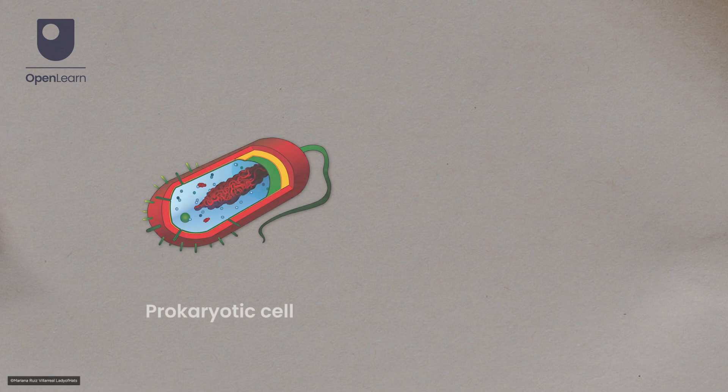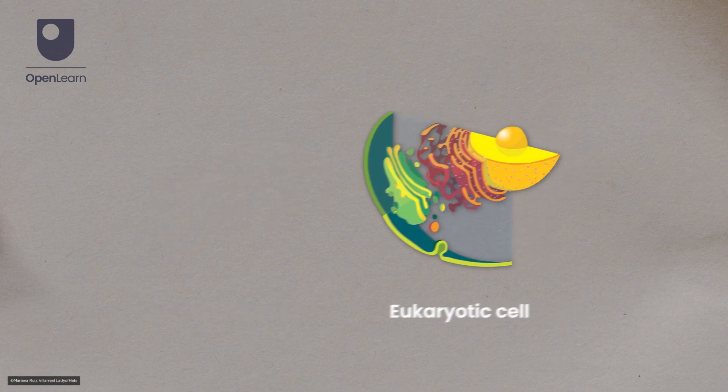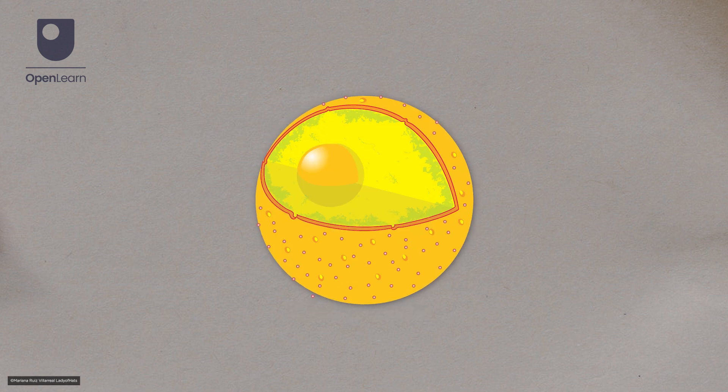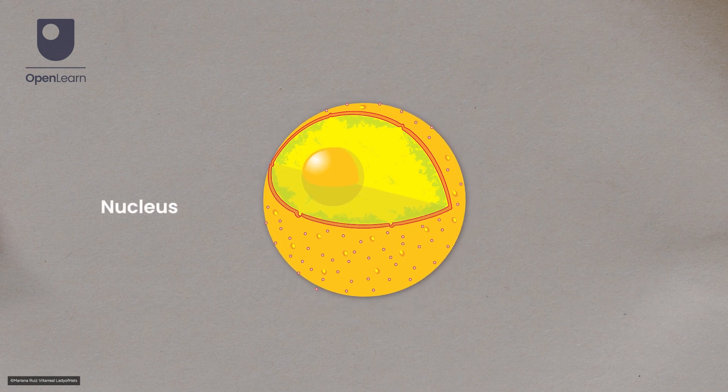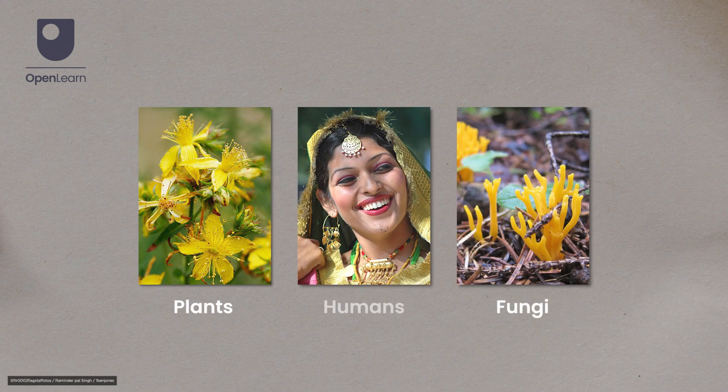Like the cell that has been shown, eukaryotic cells have their internal contents packaged up in compartments. This includes the nucleus, which contains DNA. Plants, fungi, and humans are all made up of eukaryotic cells.